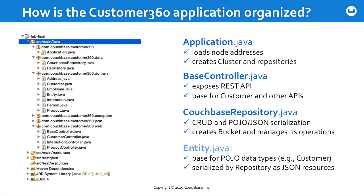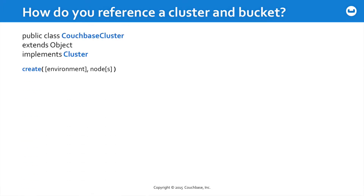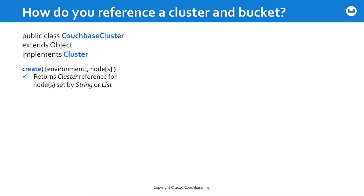Values in these objects are serialized and deserialized by the repository class to and from JSON. So, how do you reference a cluster and its bucket? The CouchbaseCluster class exposes a method called Create, to which you can pass an environment and the nodes that are the contact points for your particular cluster. It's going to return a cluster reference for those nodes, which can be set by either a string or a list. It also supports an environment settings object for controlling things such as timeouts. Those could also be controlled in a more granular way, as well, as you would see in the documentation.